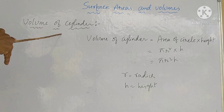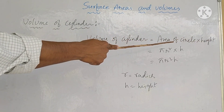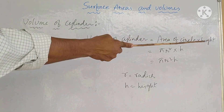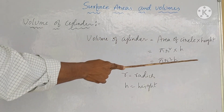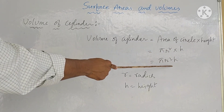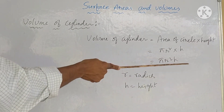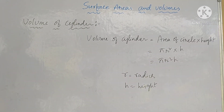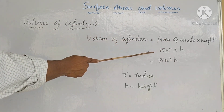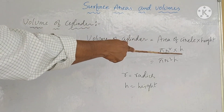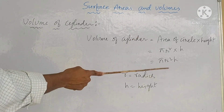Next topic: volume of cylinder. Volume = area of circle × height = πr² × h = πr²h. Here r means radius and h means height. Units are cubic units.